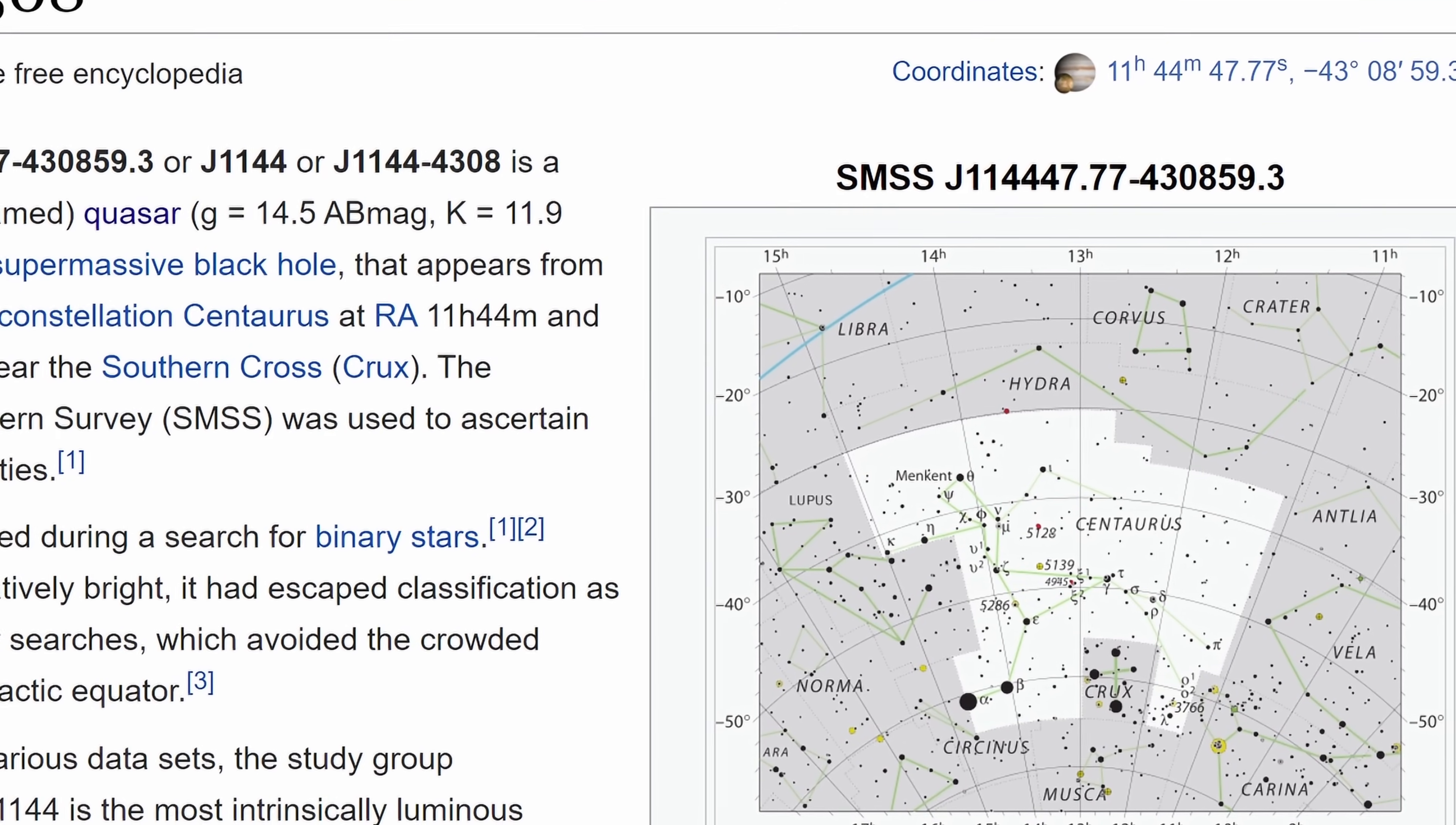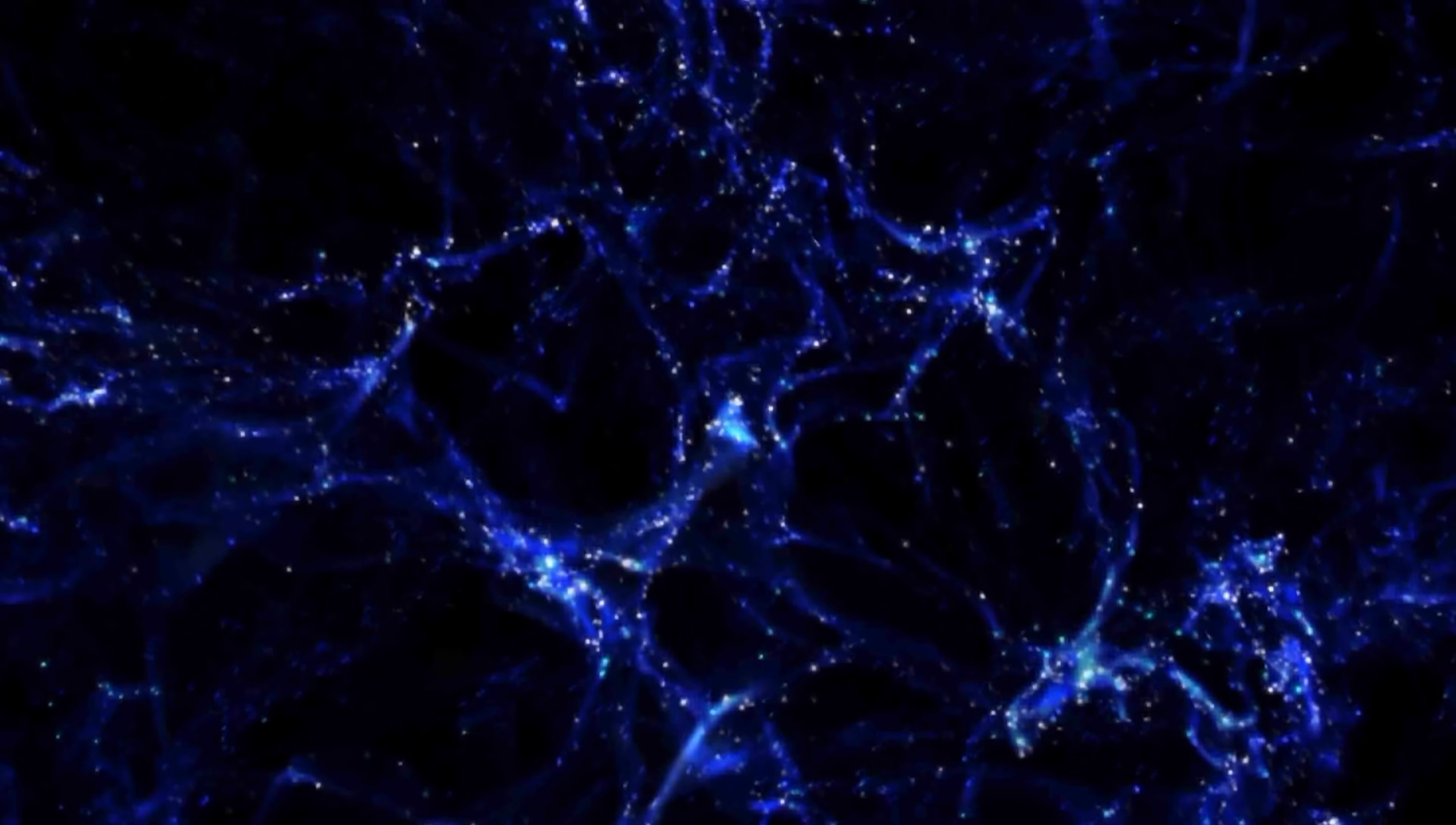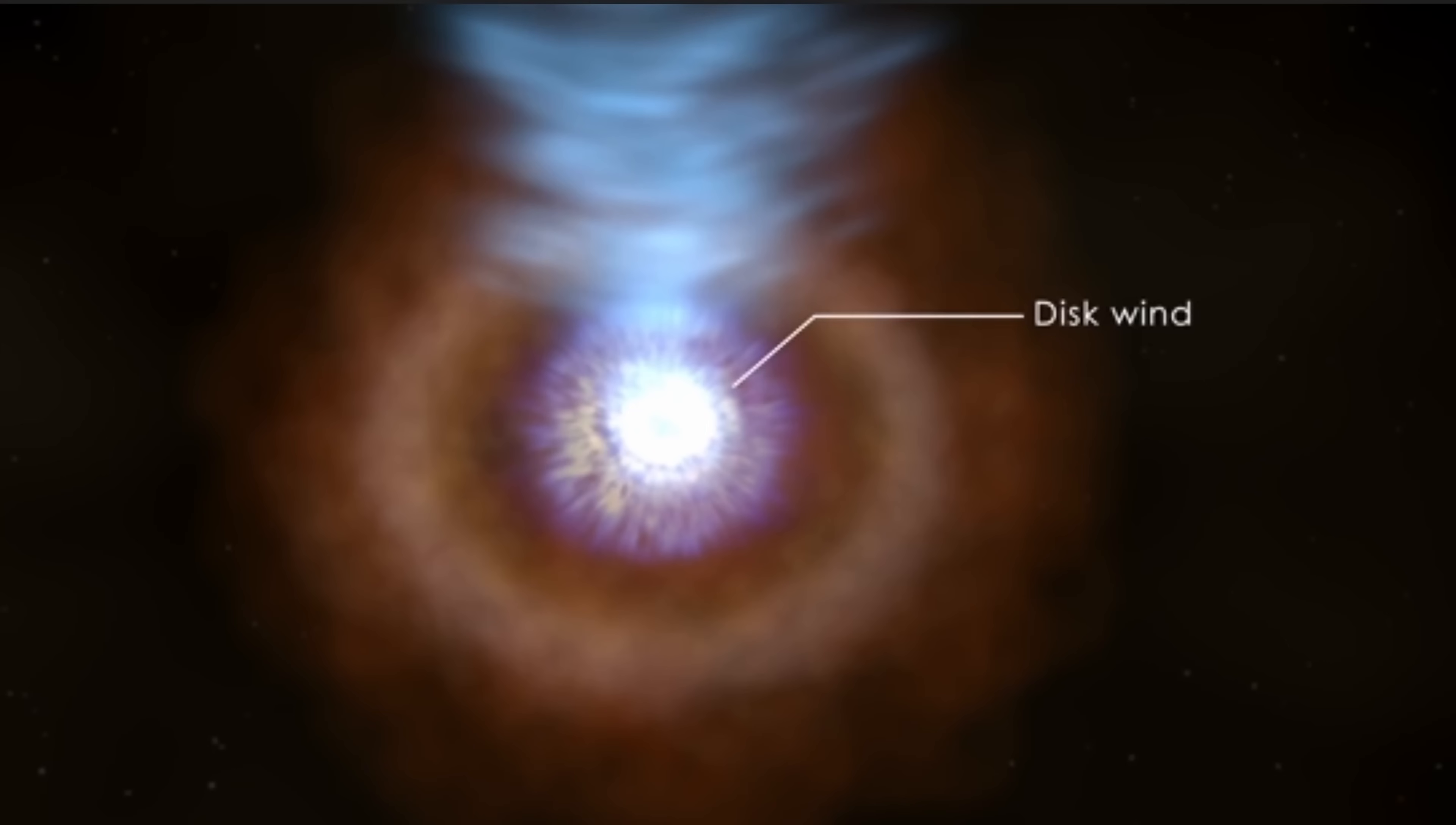The quasar currently known as G1144-4308. The quasar that beats the previous record holder, 3C273 that you see right here, by about 8 times. Essentially, it's about 8 times brighter than this. But despite its brightness, it was only found when the scientists were actually looking for different binary stars and were looking at things in the ultraviolet light. But because it's so bright, it even appears in some of the oldest photographs taken back in 1901. So it was always there, it was always very bright, but we just somehow missed it.